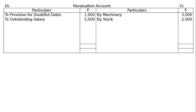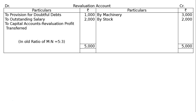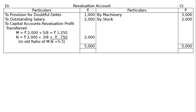Now we total the credit side, which is higher than the debit side, and it is Rs. 5,000. The revaluation profit of Rs. 5,000 minus Rs. 3,000 equals Rs. 2,000, will be distributed among M and N in the old ratio of 5 to 3. M will get Rs. 2,000 multiplied by 5/8, that is Rs. 1,250, and N will get 3/8, that is Rs. 750.